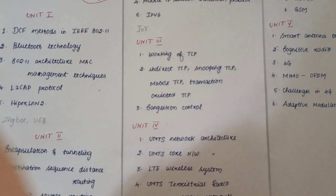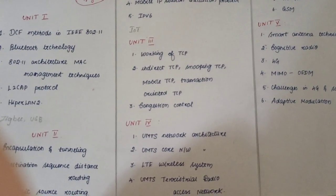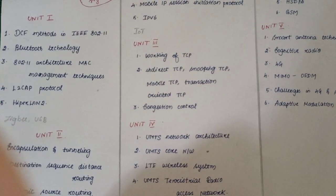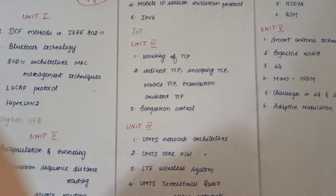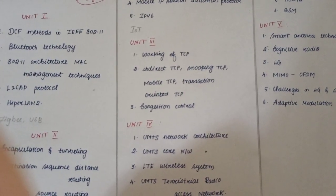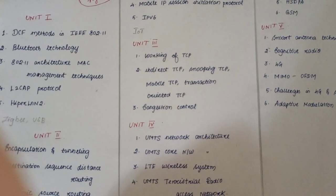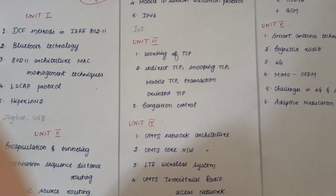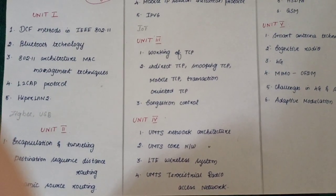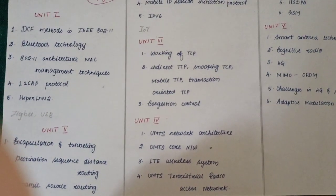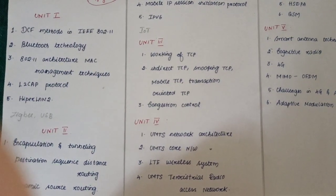Unit 3 covers transport layer linked questions related to TCP: working of TCP, indirect TCP, snooping TCP, mobile TCP, transaction-oriented TCP, and congestion control techniques.